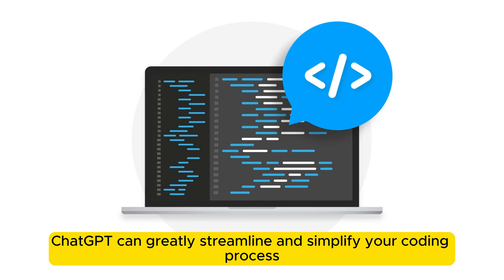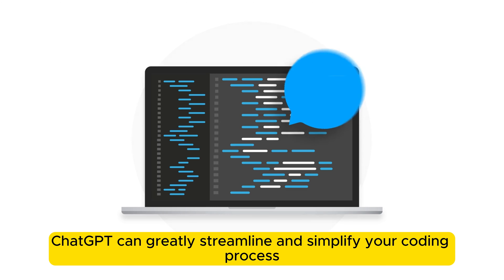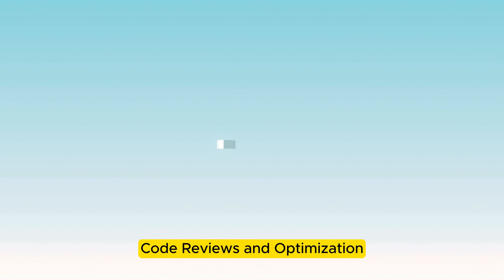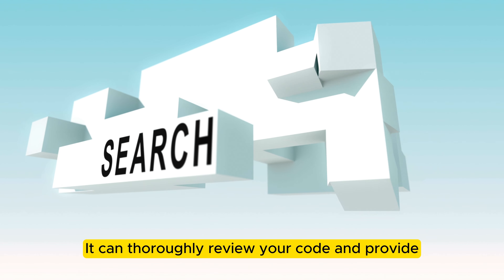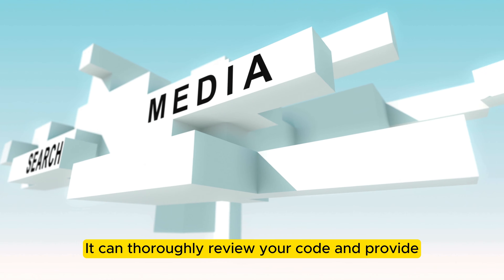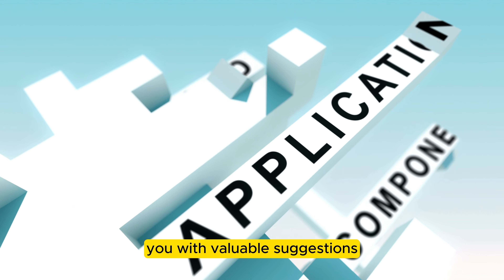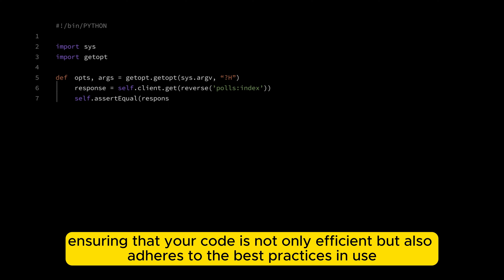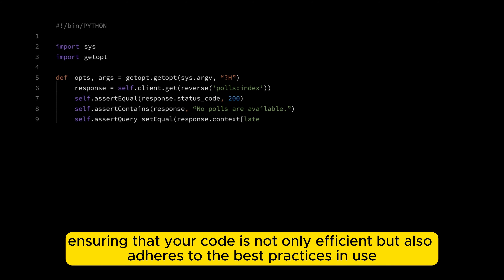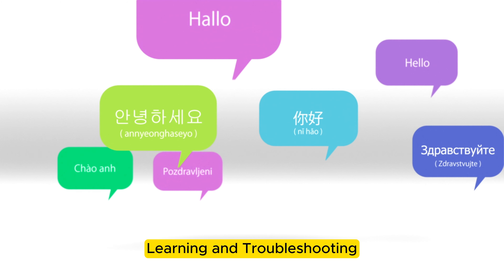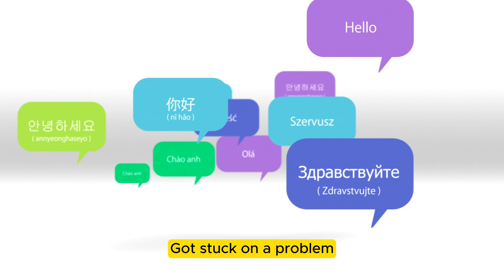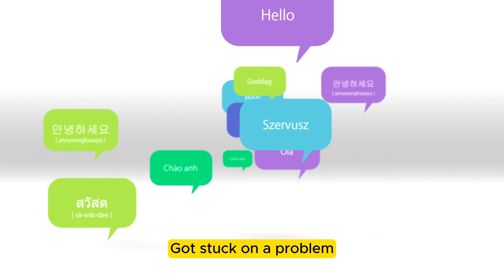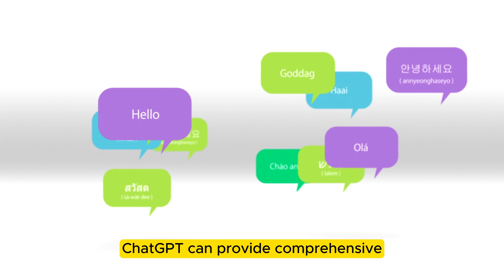No matter which language you are working with, whether it's Python, JavaScript, or anything else, ChatGPT can greatly streamline and simplify your coding process. For code reviews and optimization, it can thoroughly review your code and provide you with valuable suggestions, ensuring that your code is not only efficient but also adheres to the best practices in use.